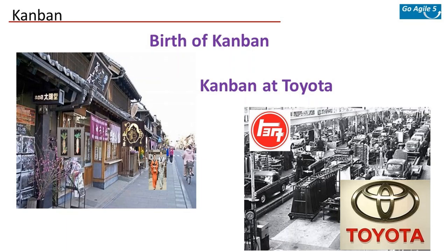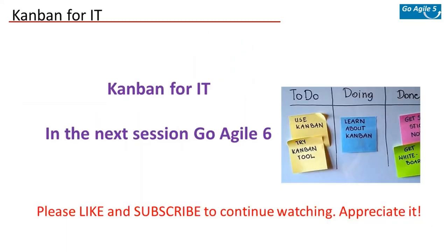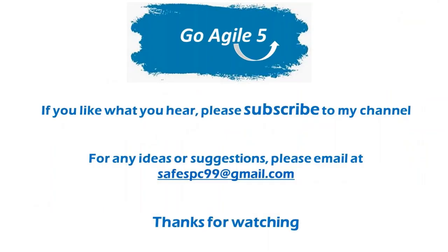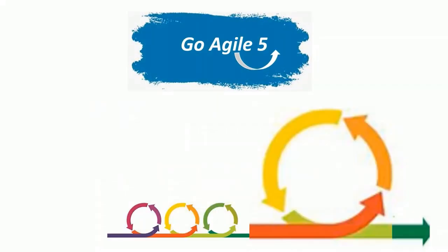So far we looked at the birth of Kanban and how it got adopted at the Toyota Production System. Next we need to see how this Kanban found its way into IT. Over time the Toyota Production System gained a lot of popularity globally, and project managers all across started trying it in different flavors. But the biggest breakthrough came in the software industry — and how that happened is what we will see in the next session, Go Agile Part 6. Till then do good, wash your hands, and stay safe.